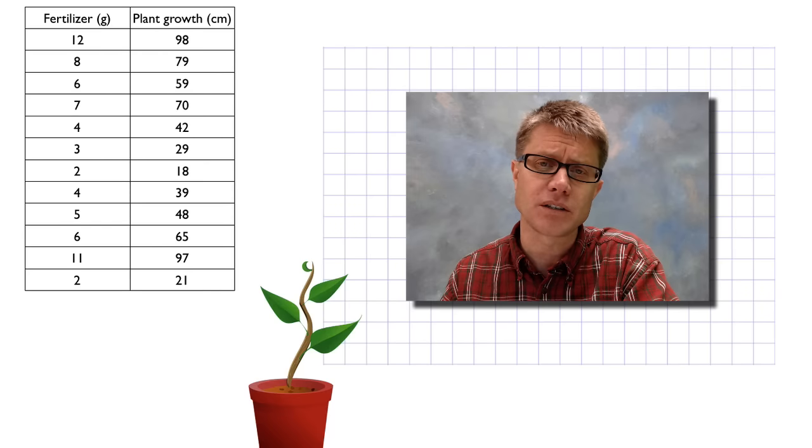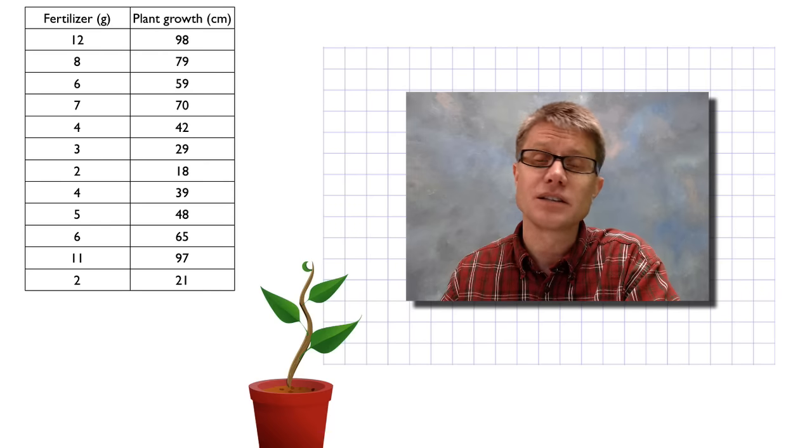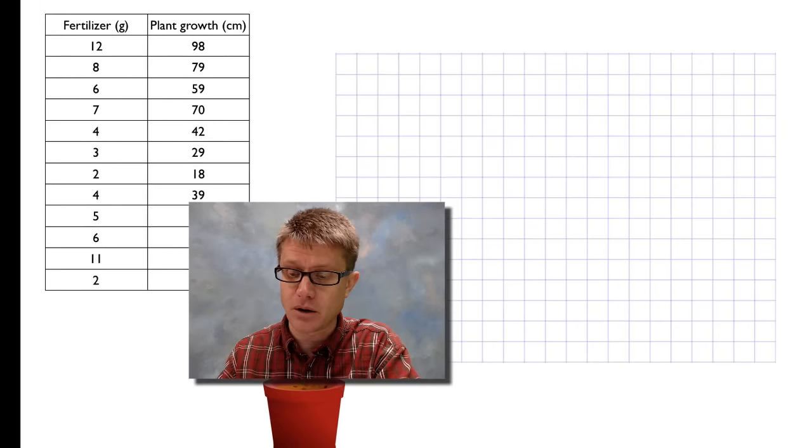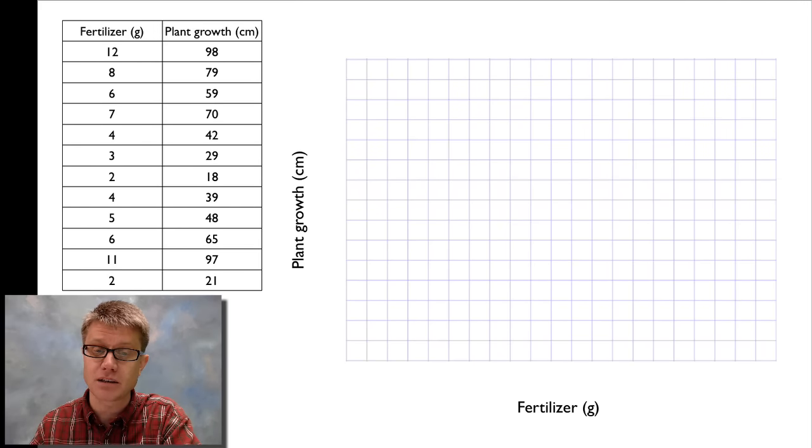The next thing I want to do is make sure I set up my axes in the right way. Since I'm varying the amount of fertilizer I want that to be on the x-axis and I want plant growth to be on the y-axis. The thing you change will be here and the thing that you measure will be here.